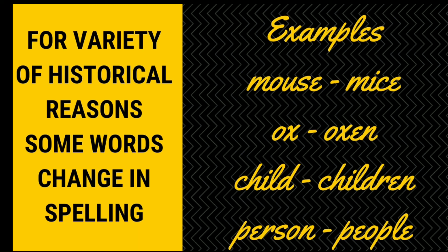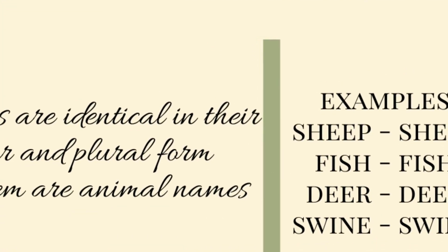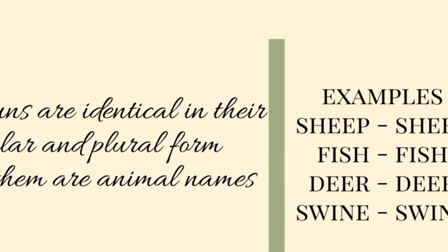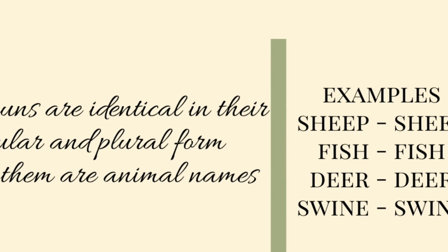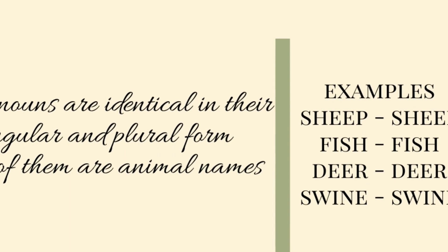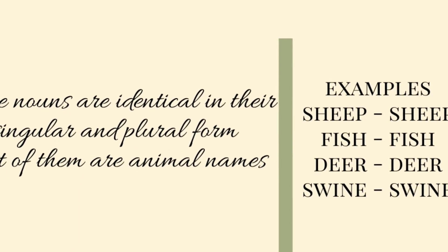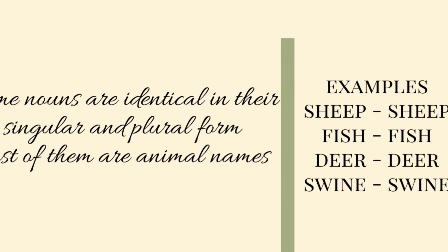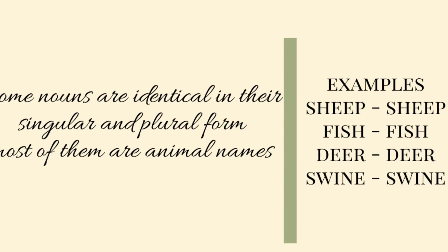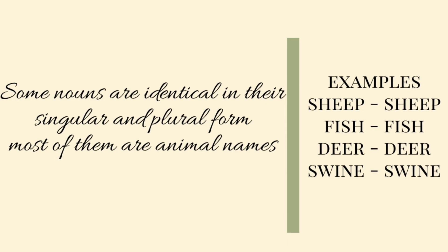Some nouns are identical in their singular and plural forms — they don't change their form. Most of these are animal names. For example: sheep is both singular and plural. Fish, deer, and swine also have identical singular and plural forms.